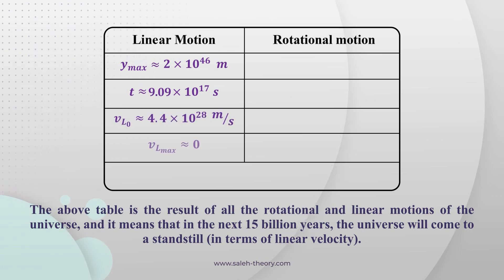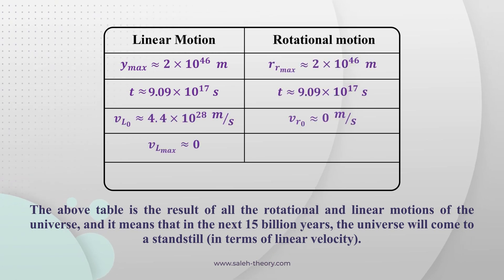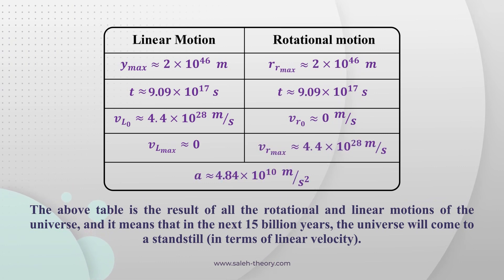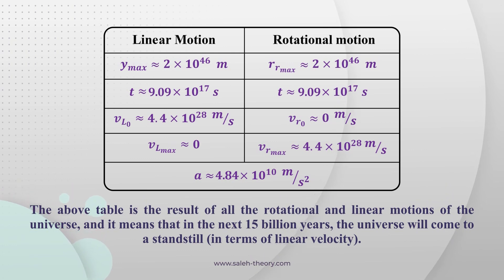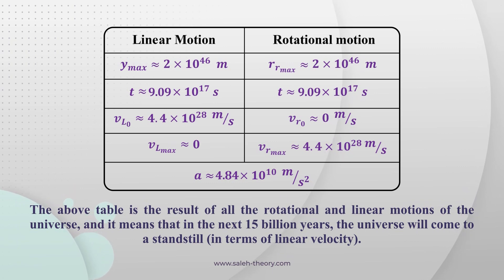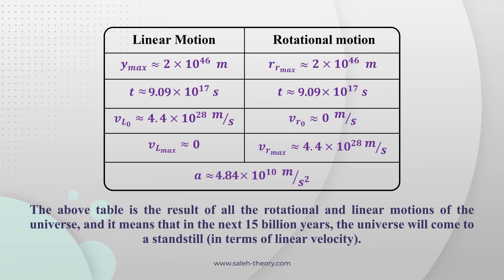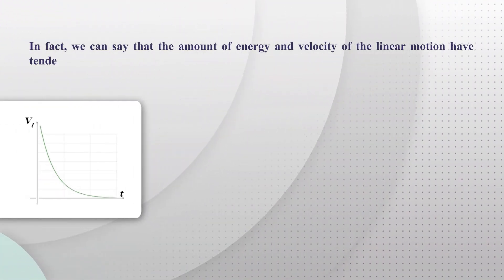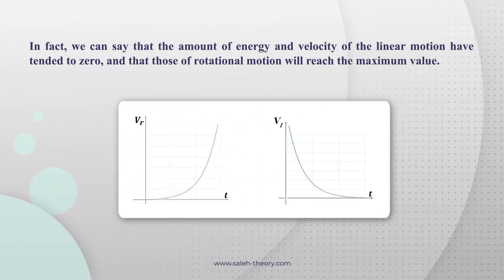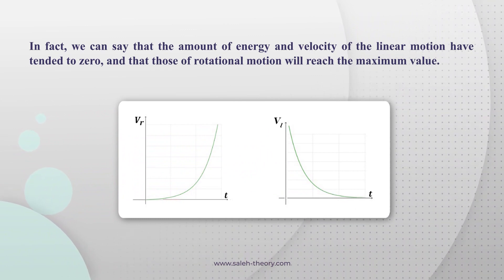The above table shows the result of all the rotational and linear motions of the universe. It means that in the next 15 billion years, the universe will come to a standstill in terms of linear velocity. We can see that the amount of energy and velocity of the linear motion have tended to zero, and the rotational motion will reach its maximum value.